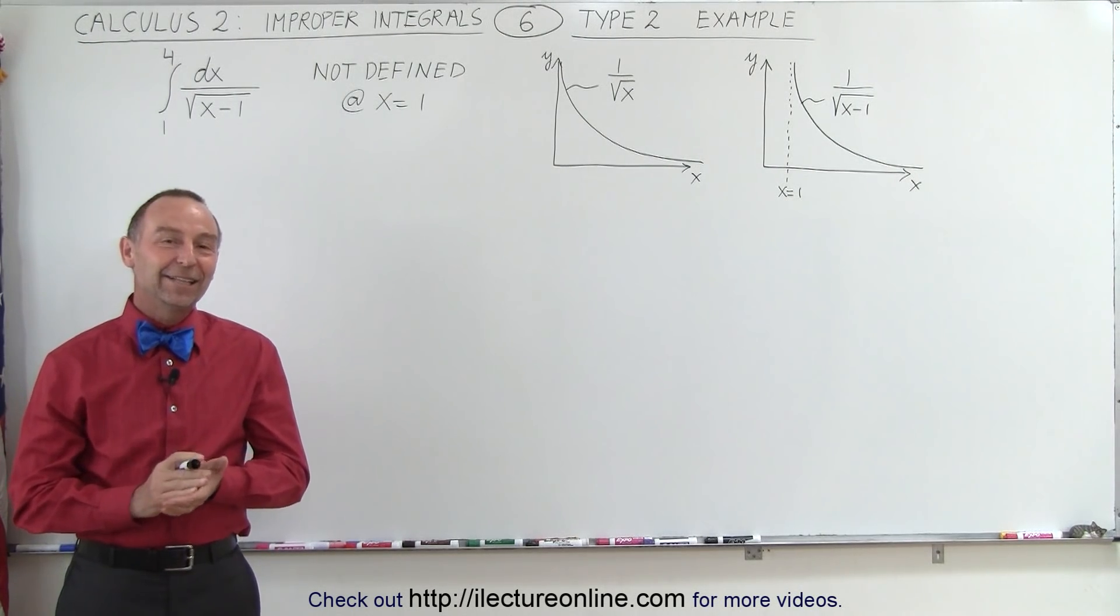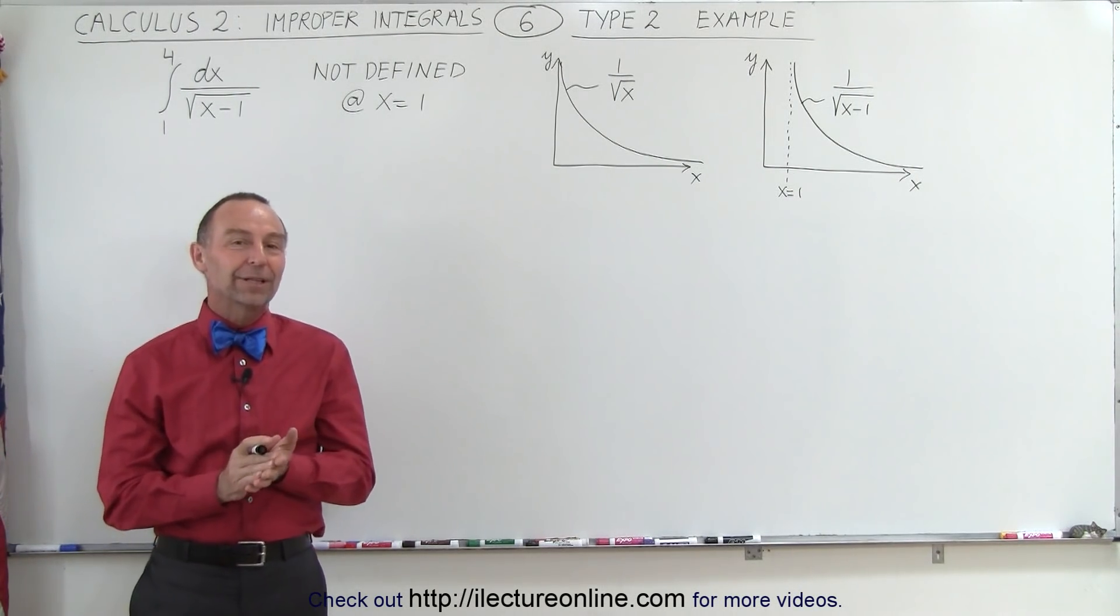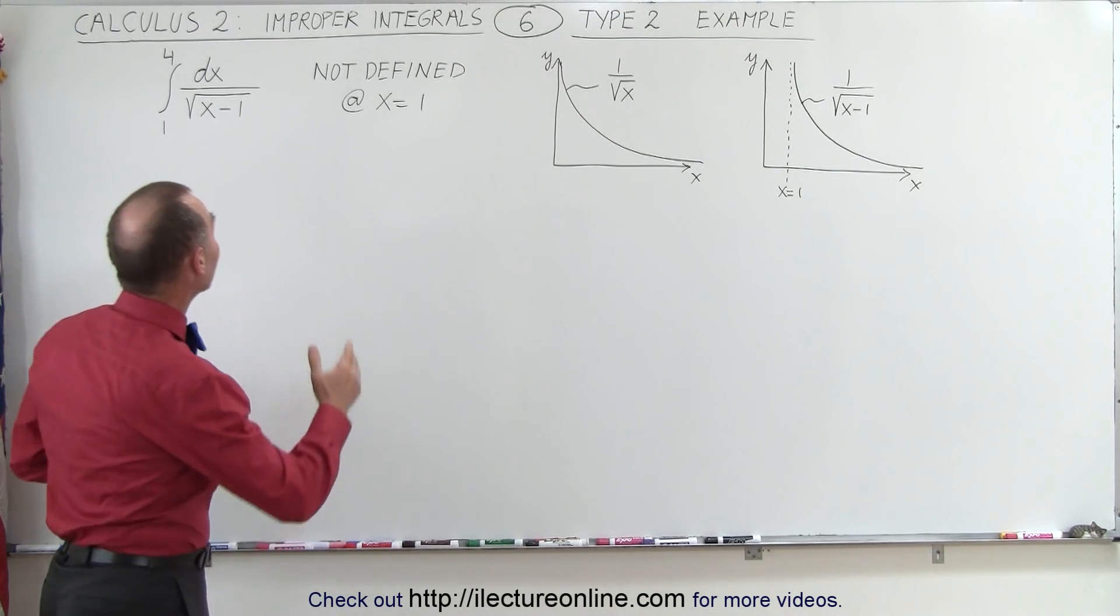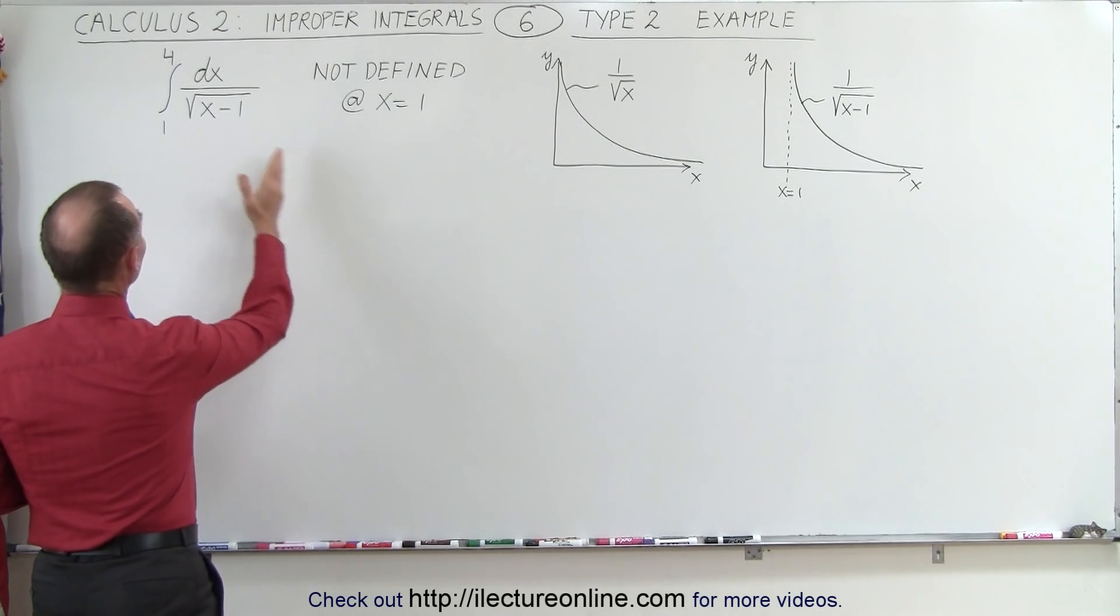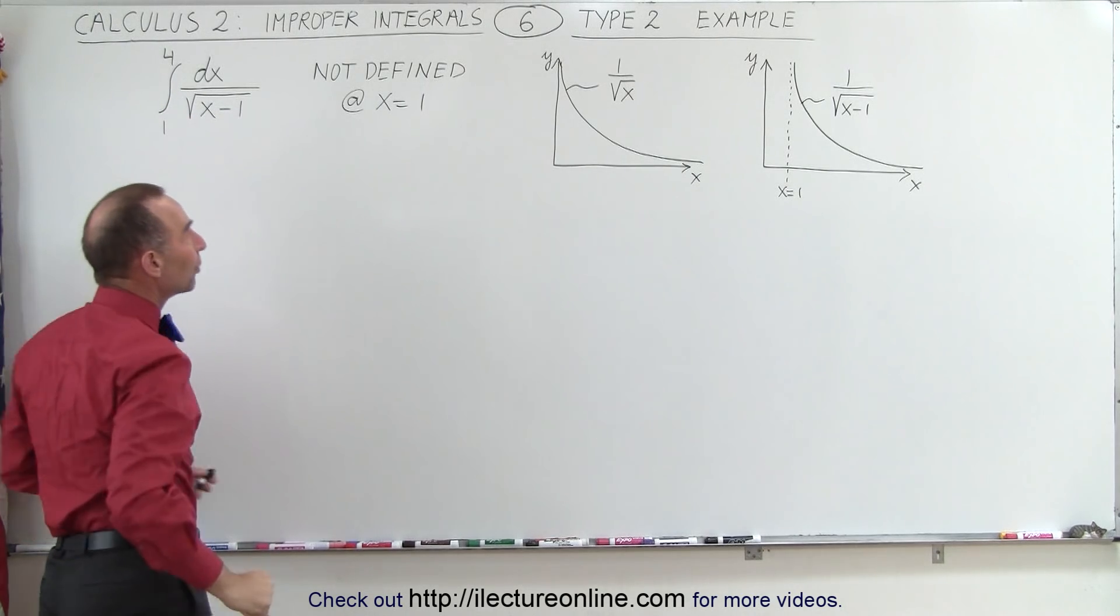Welcome to ElectronLine. The other type of improper integral is the type where the function is not defined at one limit, the other limit, or somewhere in between.